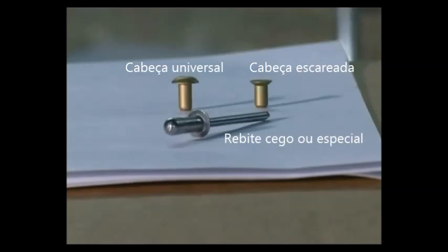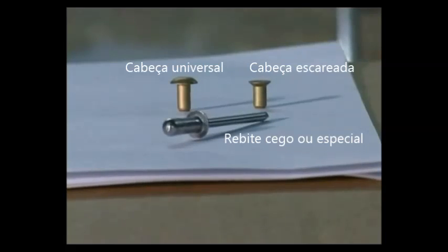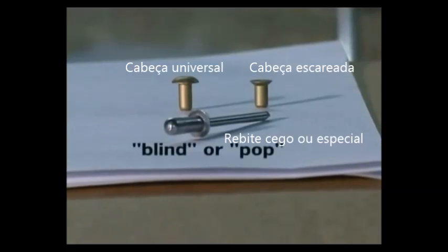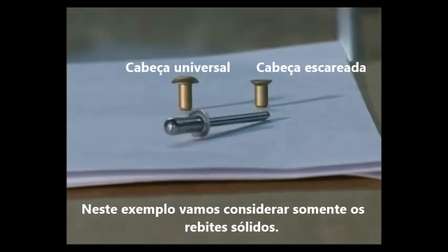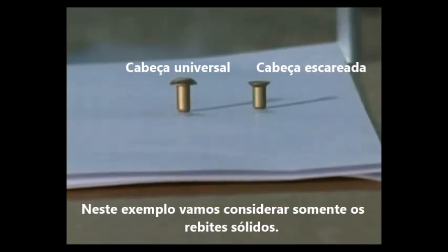We must first learn to identify and understand the various kinds of rivets and how they are sized. In the foreground is a blind or pop rivet. Very few of these are used in the construction of your RV, so we will remove this and limit our discussion for now to the solid rivets, of which there are several thousands to be installed in your kit.